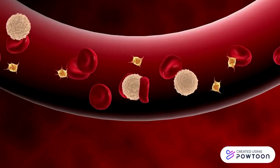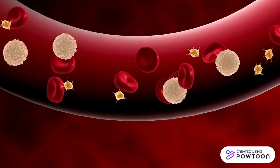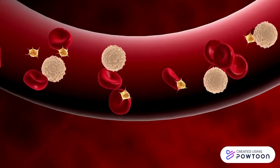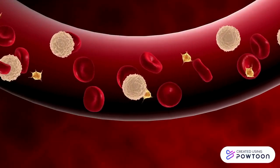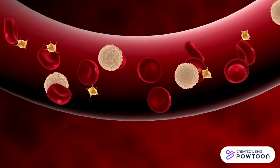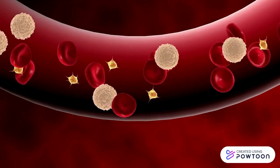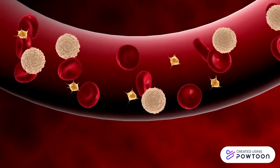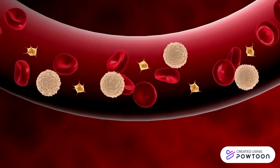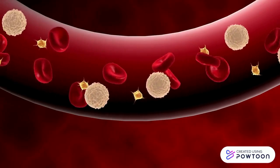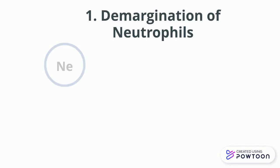Leukocytosis reflects the number of white blood cells found only in the bloodstream. Neutrophils, being the most abundant type of leukocyte, play a key role in understanding this change.